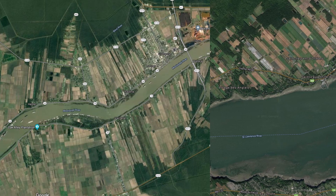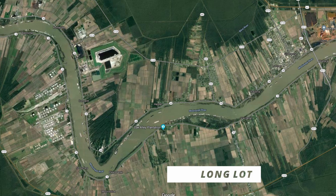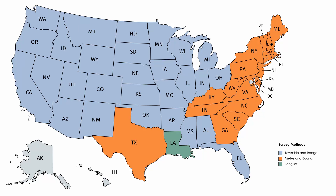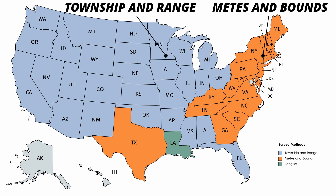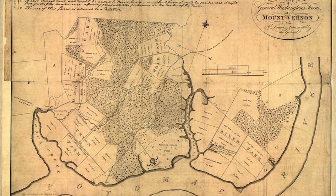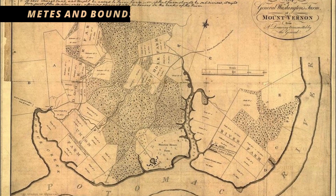This transitions us perfectly to the survey methods. The first is the long lot method, most prevalent in Quebec and Louisiana — generally French-influenced regions. Then you have the township and range and the metes and bounds. For metes and bounds, you'll see this more along the east coast, and the township and range shows the Midwest and west coast. When settlers first came to the United States, they weren't worried about organization — just survival. Then, as the government was well-established and they moved west, they developed a more organized system. George Washington was actually a land surveyor himself and used metes and bounds, using landmarks as the most efficient method at the time.